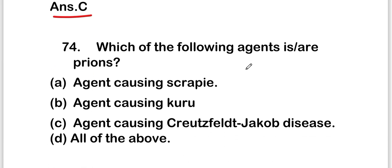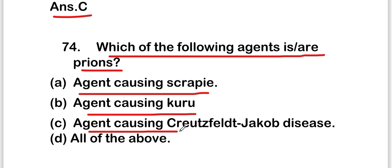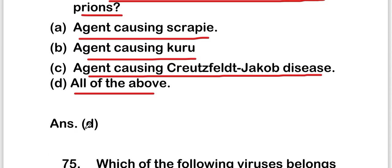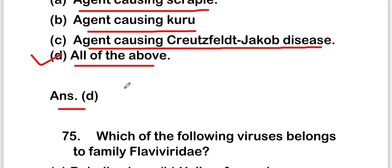The next question is: which of the following agents are prions? Options are: agent causing Scrapie, agent causing Kuru, agent causing Creutzfeldt-Jakob disease, or all of the above. The right answer is option D — all of these options are correct; all are prions.